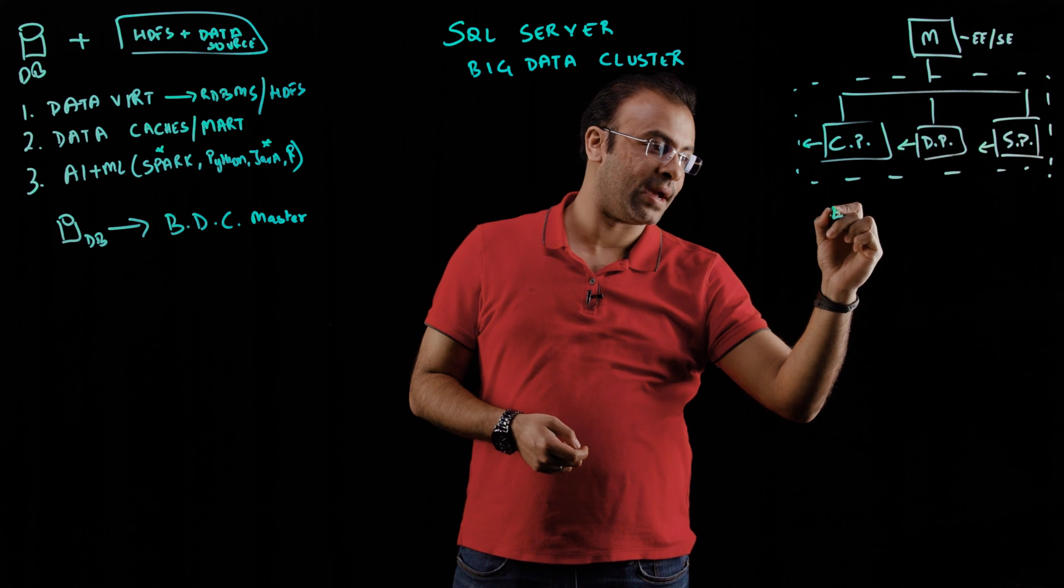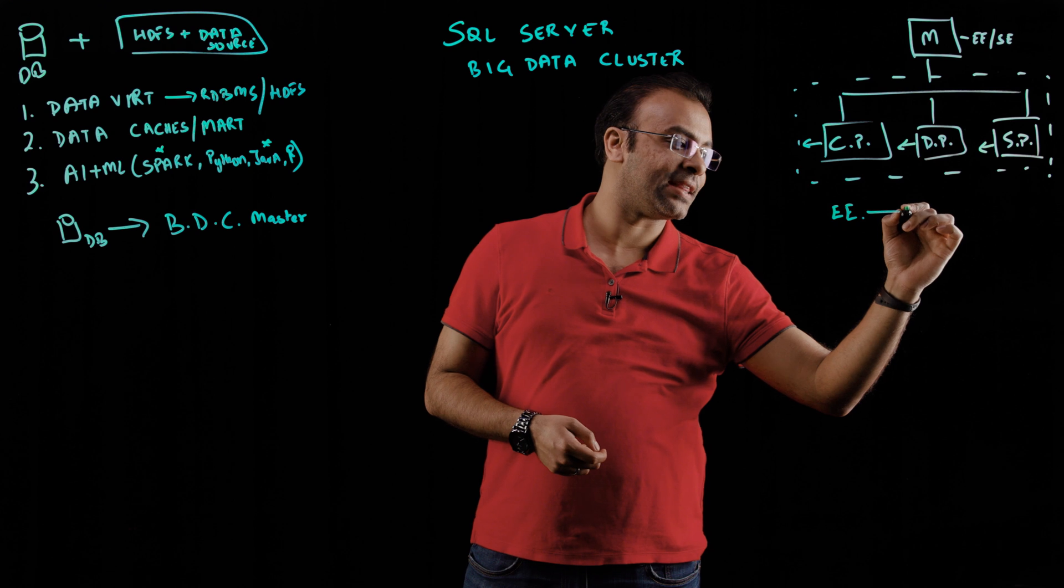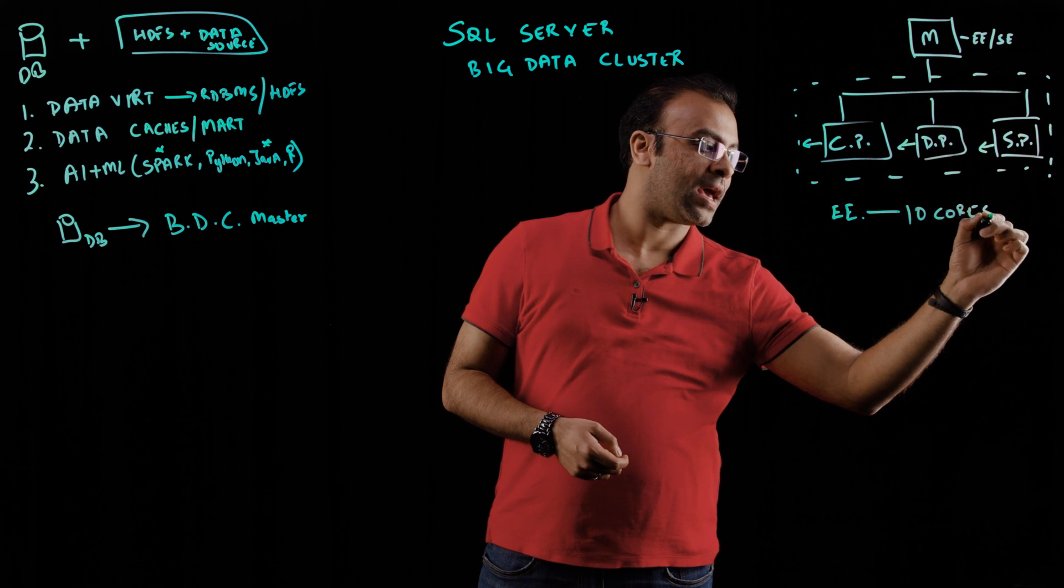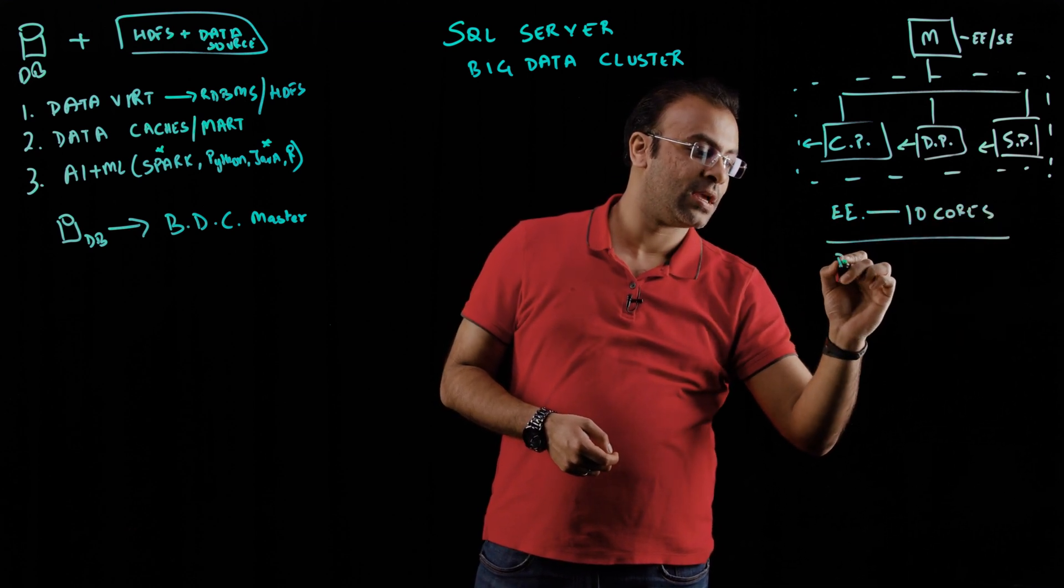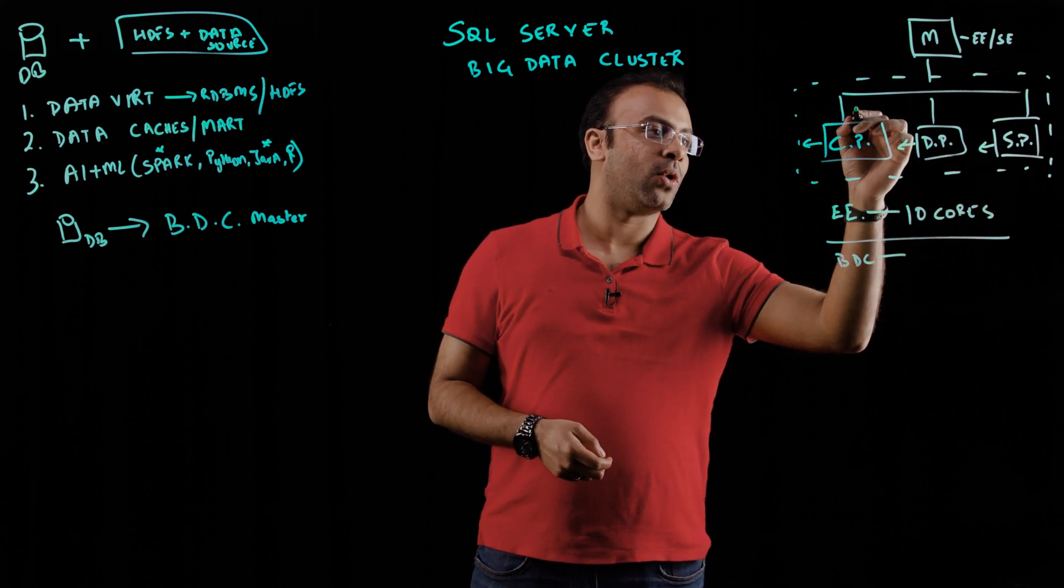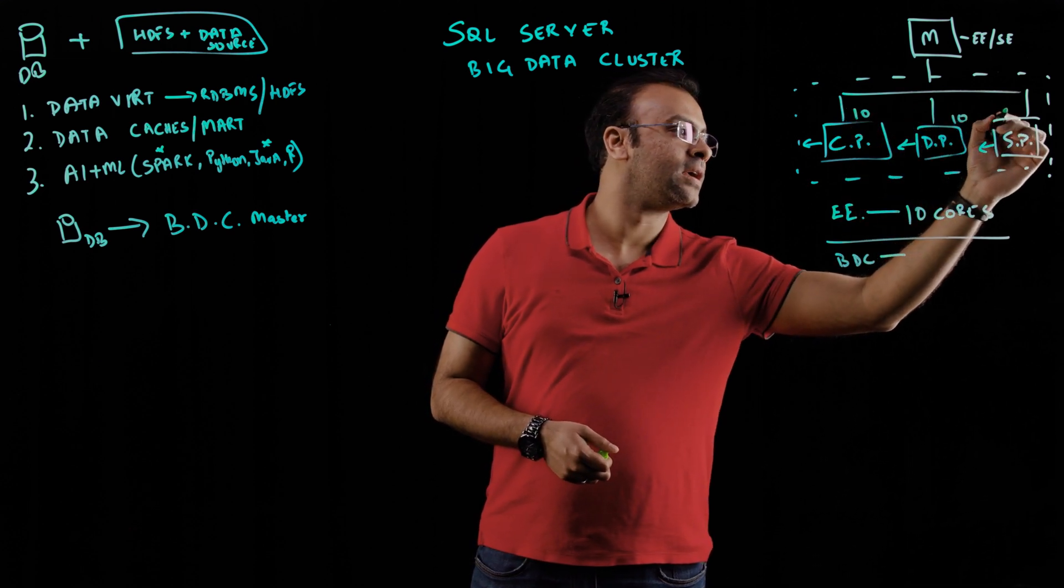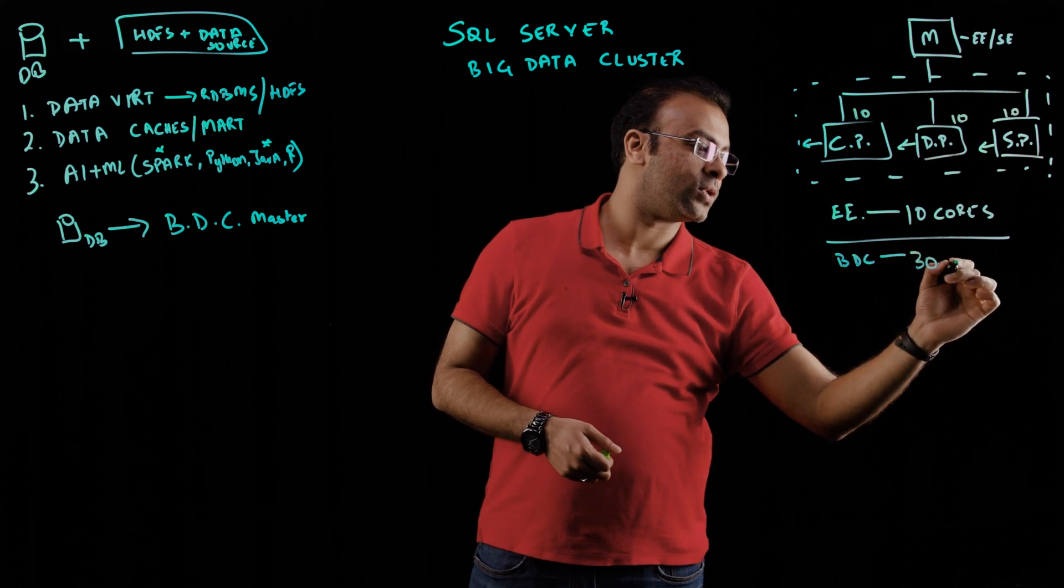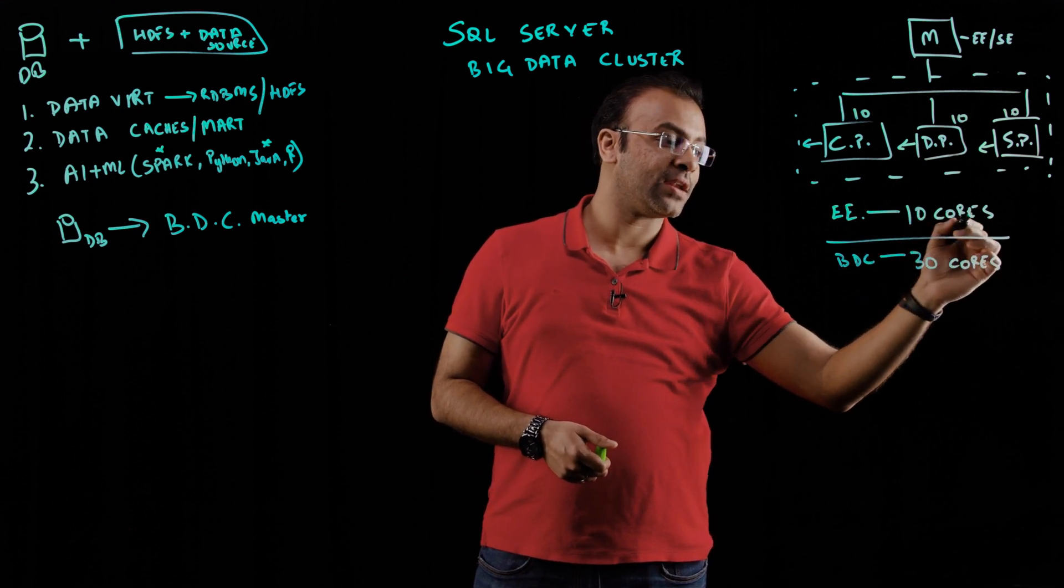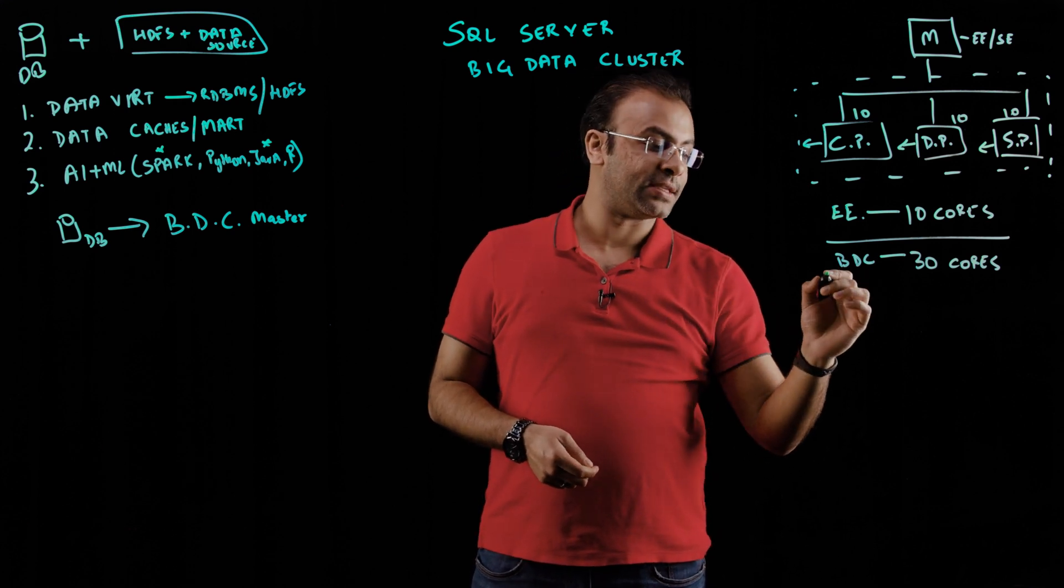Let's say the master instance in my scenario is using an Enterprise Edition of SQL Server with about 10 Enterprise Edition cores. Then your big data cluster nodes have the compute pool, data pool, and storage pool, and let's say all of them have 10 cores each just to keep the calculation simple. So now in this example, you have 30 cores of big data cluster. You would need to license for 10 cores of Enterprise Edition and 30 cores of big data clusters. These are priced differently.